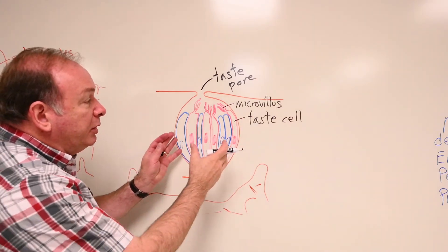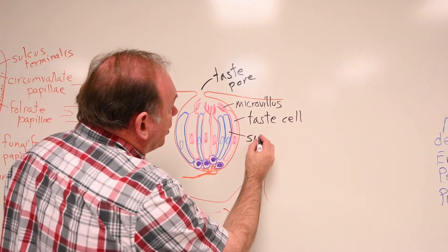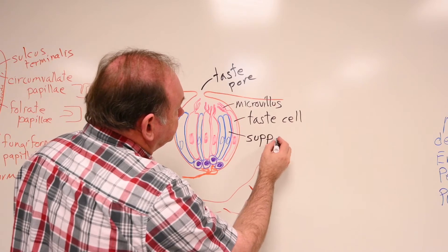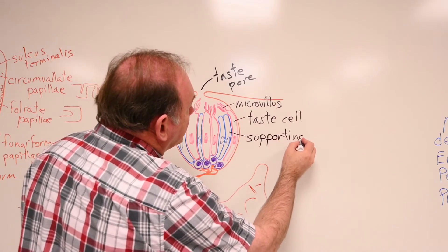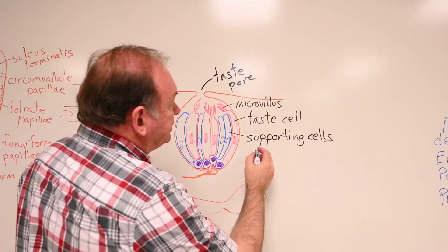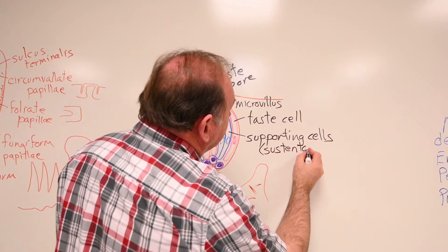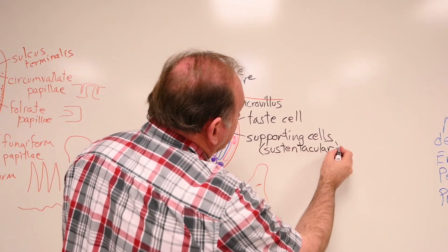And in between the taste cells are other cells we consider supporting cells. Sometimes called sustentacular cells. Another name you'll see. Sustentacular cells.